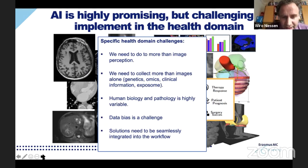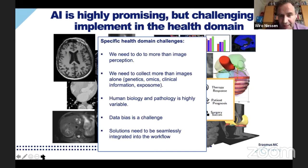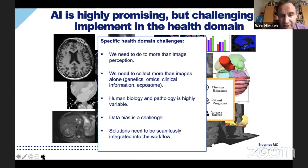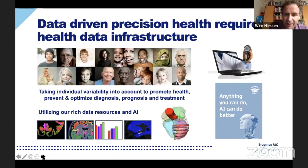Human biology and pathology is highly variable, and if we collect data, data bias is a major challenge. If the outbreak that started in China — can we learn from data from Chinese patients and utilize the same data when the pandemic arrives in the Netherlands, for example? Or should we have specific data from our own databases? There may be biases in the data, and we see that as a big challenge for introducing these techniques on a global scale.